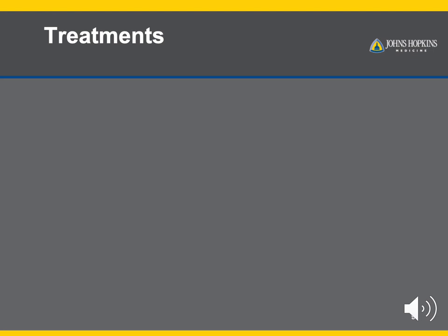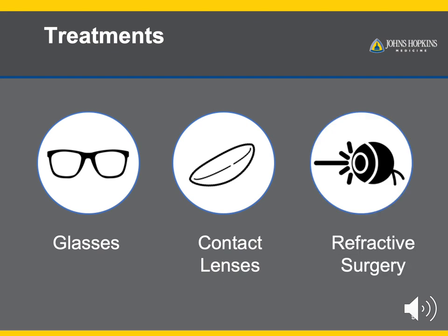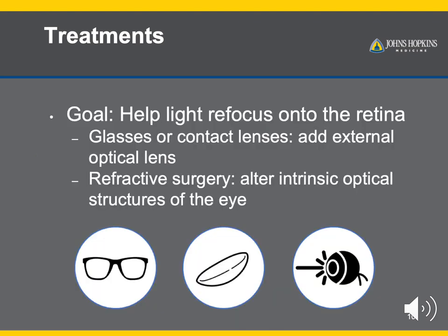Treatment options for refractive errors include glasses, contact lenses, and refractive surgeries. Not all refractive errors require treatment — many small errors do not require any treatment. The threshold for when a child should be corrected depends upon the severity of the refractive error, the age of the child, the caretaker's preference, and other factors. Symptomatic refractive errors, even when small, should be treated. The end goal of all treatments is to allow light to focus back onto a single image on the retina, whether through extrinsic lenses such as glasses or contacts, or by permanently altering the intrinsic refractive structures of the eye through surgery.